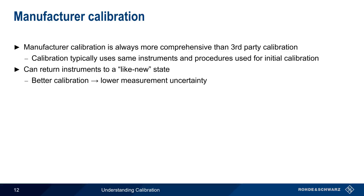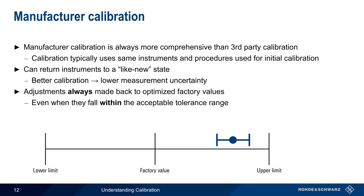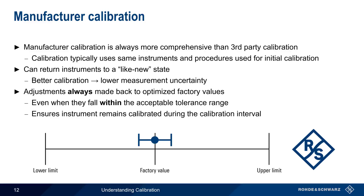Note, too, that in a manufacturer calibration, adjustments are always made to ensure that all parameters are at the optimized factory values. Even values that fall within the limits and are passing are still adjusted back to the original factory value. In addition to improving measurement uncertainty, these adjustments also help to ensure the validity of the manufacturer-recommended calibration interval — that is, instruments remain calibrated longer when values have been readjusted to the original factory values.